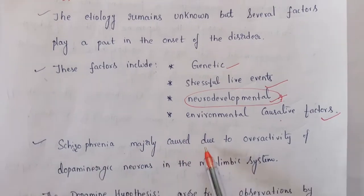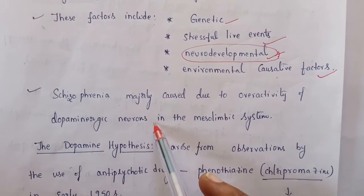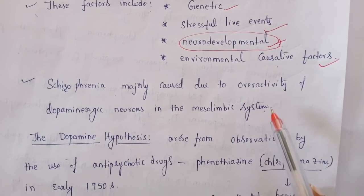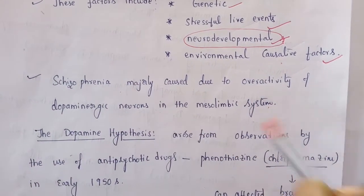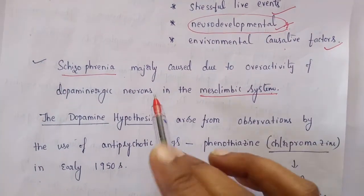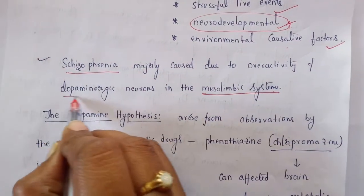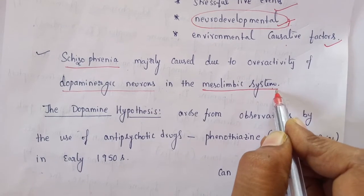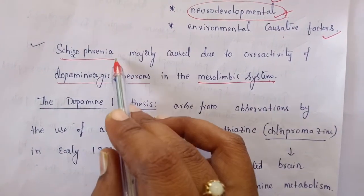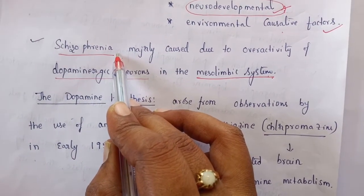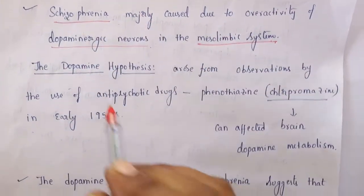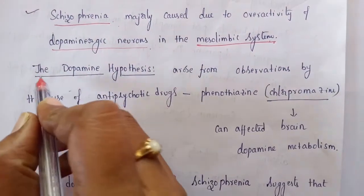Schizophrenia is majorly caused due to overactivity of dopaminergic neurons in the mesolimbic system. Dopamine is a type of excitatory neurotransmitter, and its overactivity in the mesolimbic system ultimately leads to schizophrenia. The target of antipsychotics is to reduce this overactivity. This is proposed by the dopamine hypothesis.